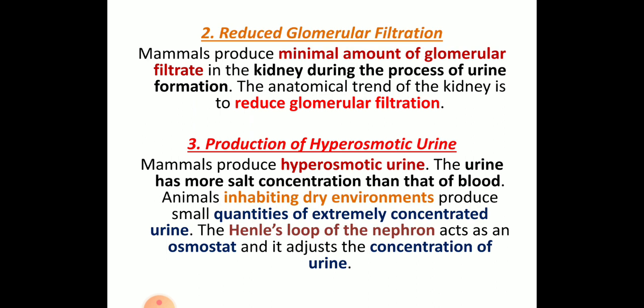The third mechanism is production of hyperosmotic urine. If they are living in desert conditions, they must secrete concentrated urine, because if they secrete diluted urine, the loss of water through urine will be excessive. That is why they produce hyperosmotic urine — the urine has to be more salt-concentrated than the blood. Animals inhabiting dry environments produce extremely concentrated urine. The loop of the nephron acts as an osmostat and adjusts the concentration of the urine, helping them overcome osmoregulation.